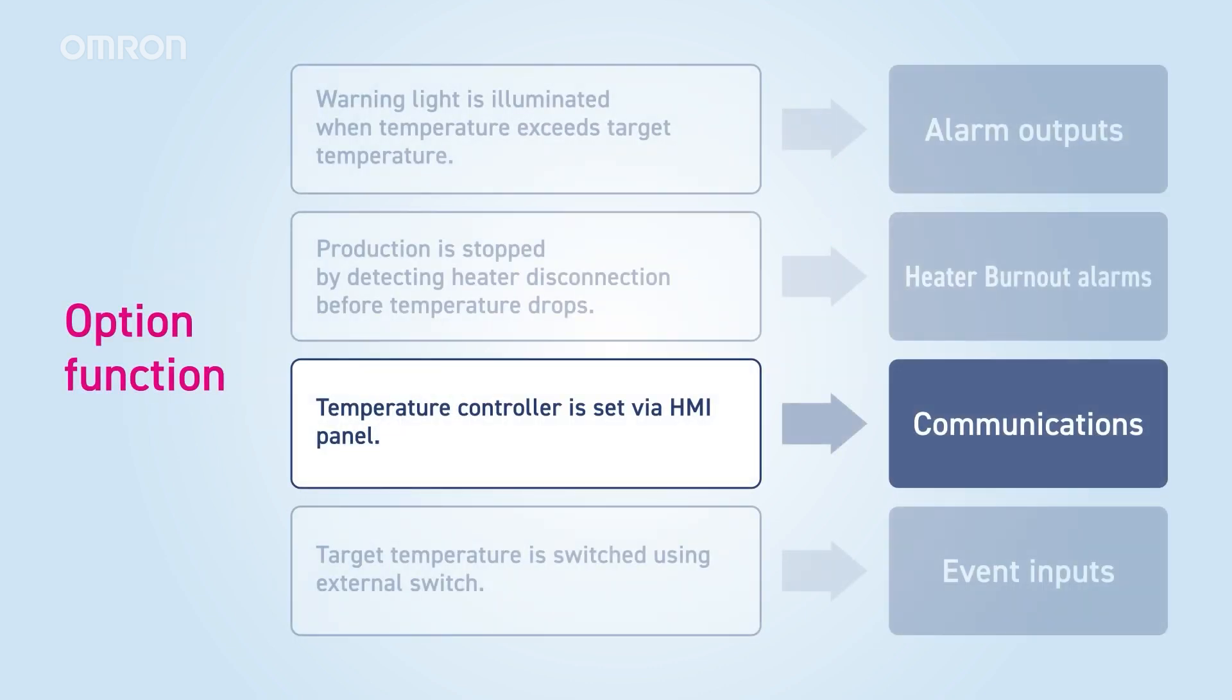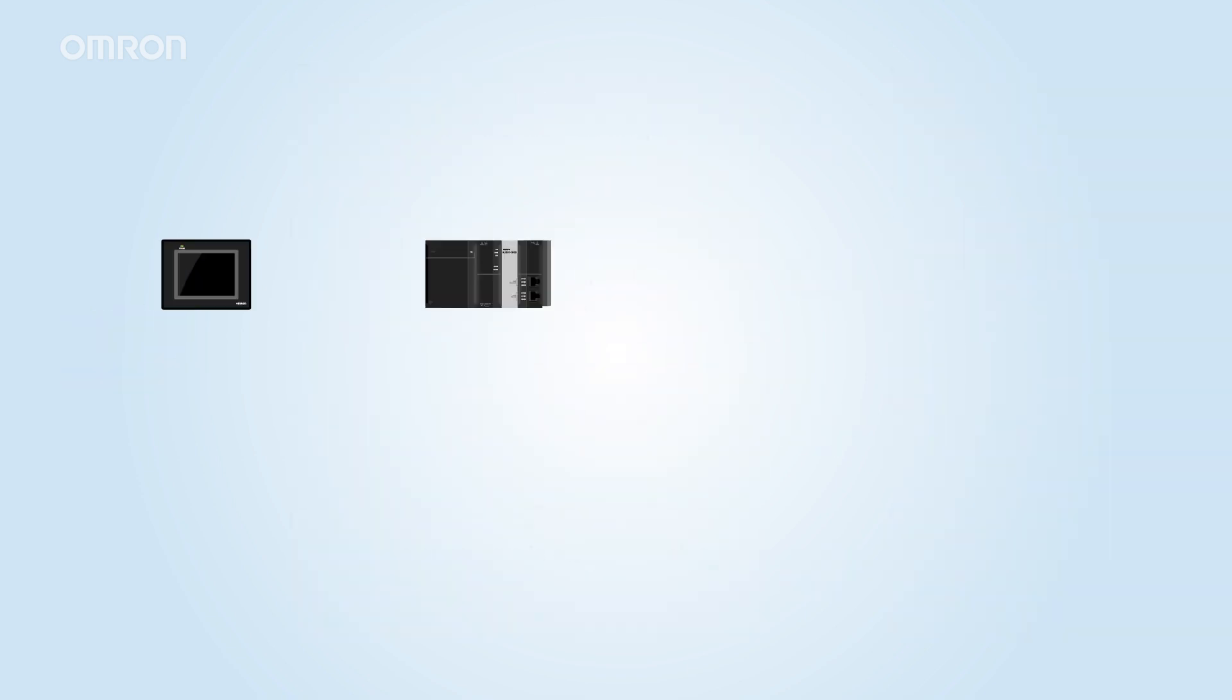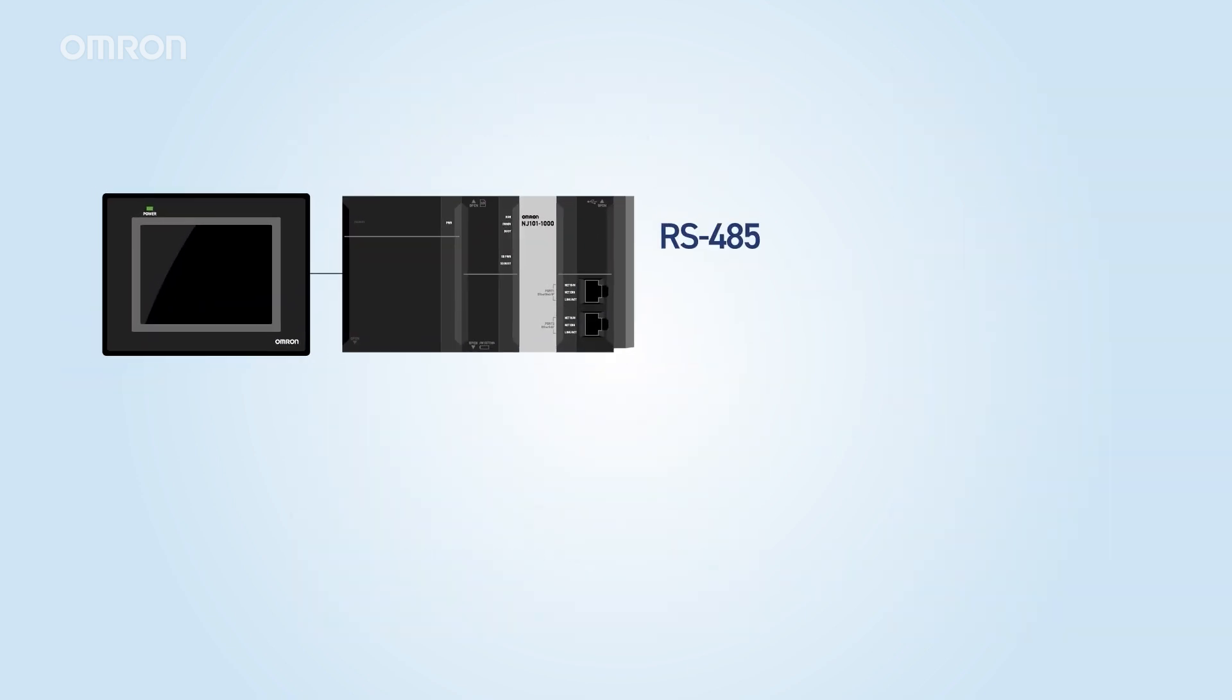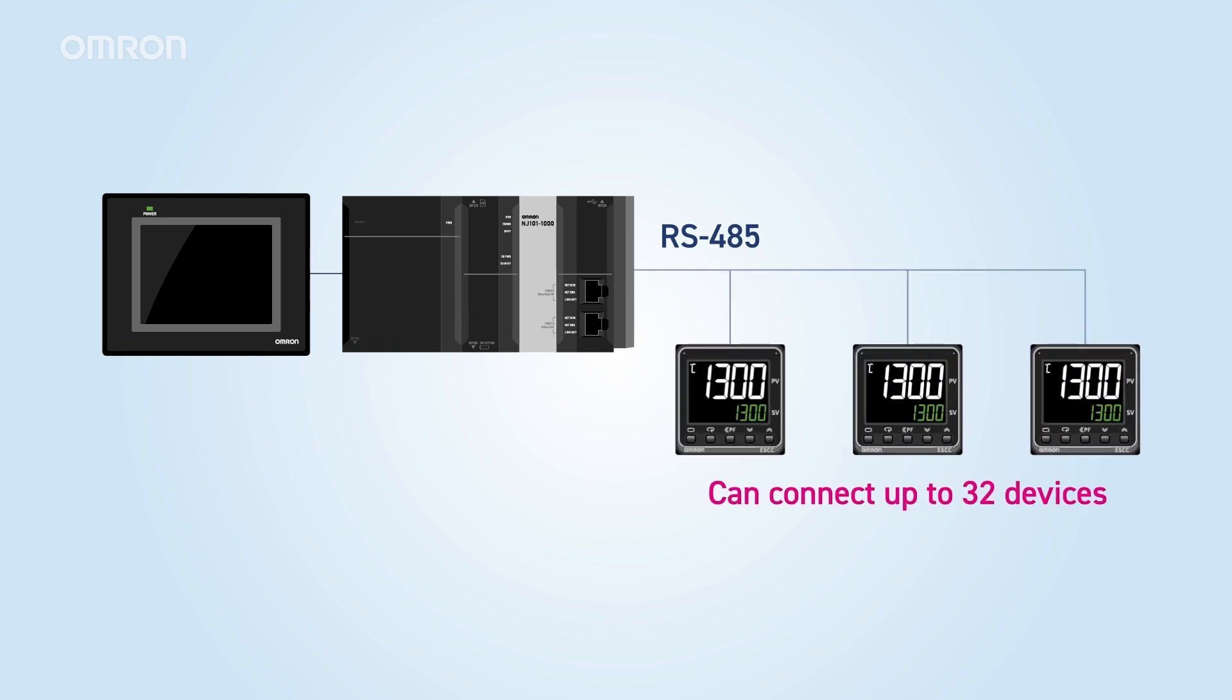Next, the temperature controller can communicate with a higher-level device. Our temperature controller, E5CC, uses RS-485 communication. By connecting the HMI panel and temperature controller through a PLC, you can set like target temperature and PID and issue operation commands such as run-stop.